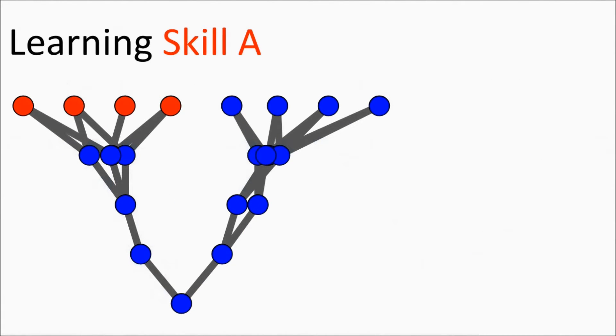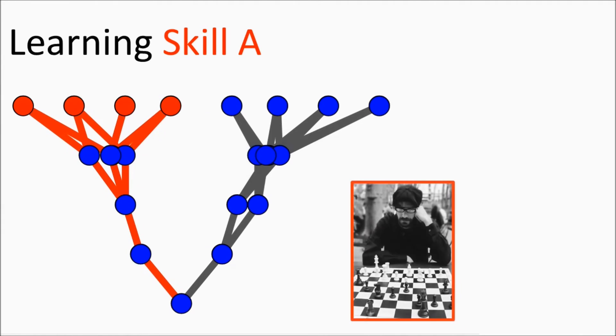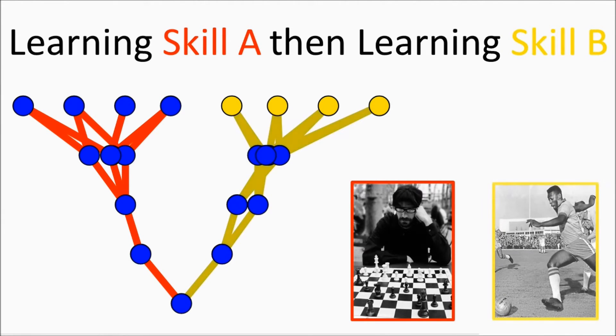We hypothesize that the evolutionary pressure to form neural modules could help reduce catastrophic forgetting, because a new skill can be learned in a different module than the previous skill, avoiding destructive interference.